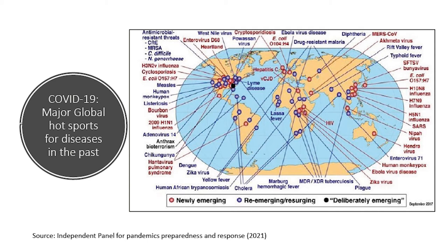The map includes yellow fever, dengue fever and Zika, diarrhea outbreaks, MERS, SARS, and Ebola. It will be interesting for you to see that this is not the first and last pandemic we are going to experience.